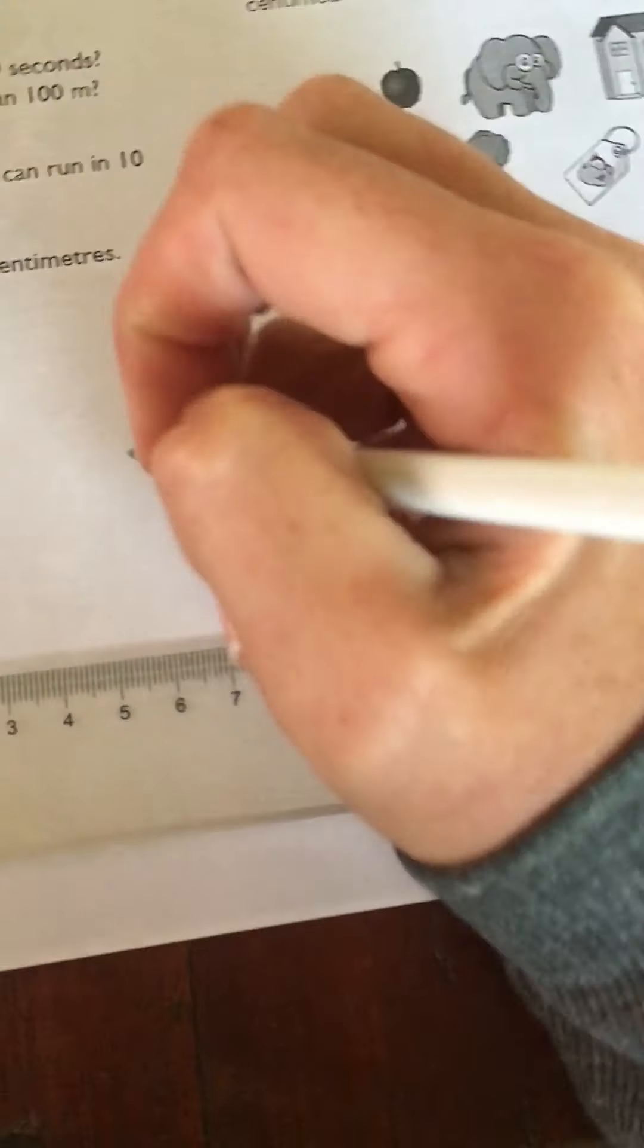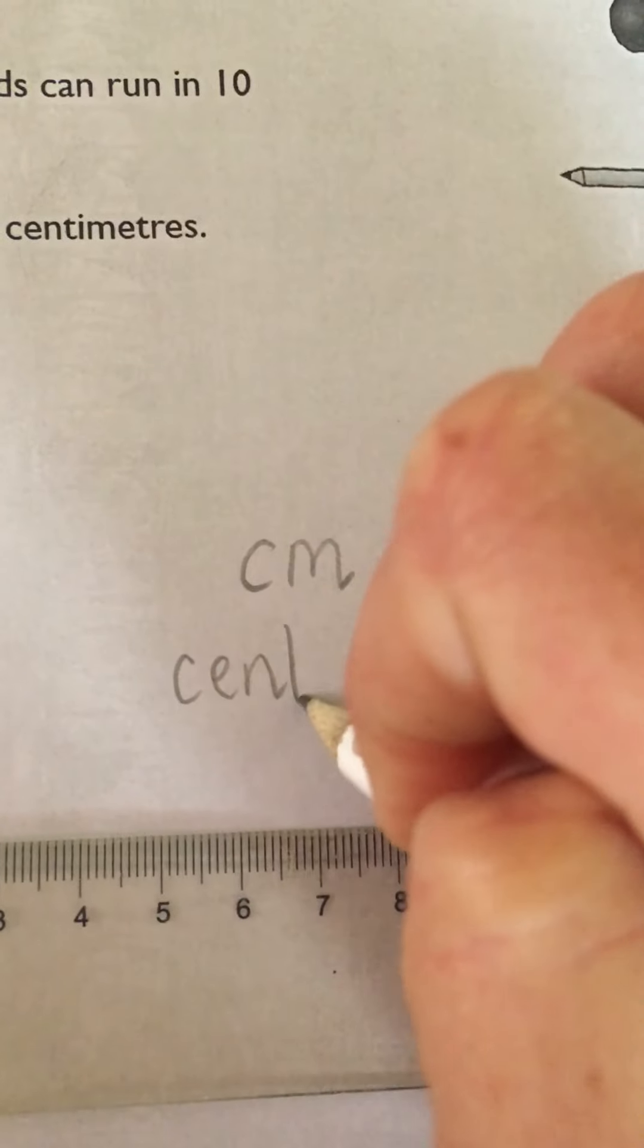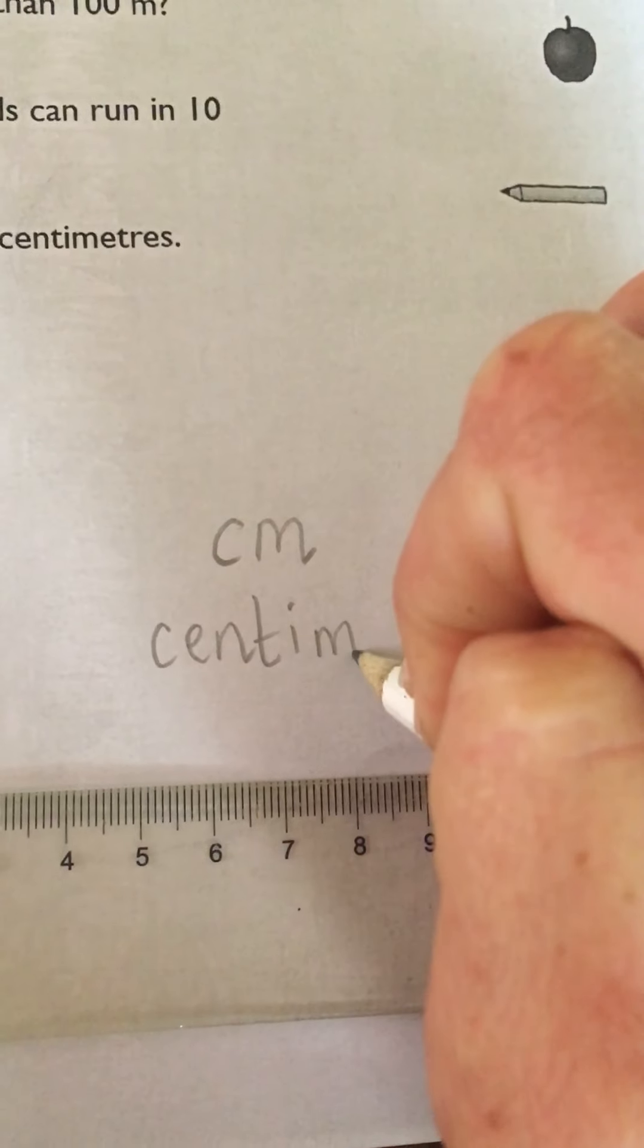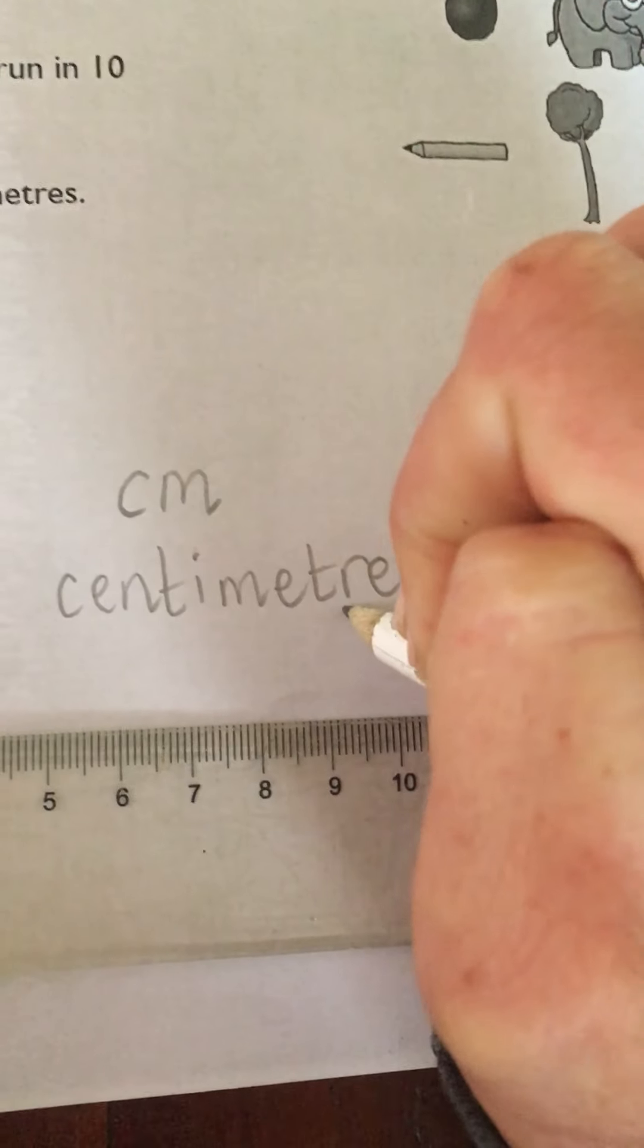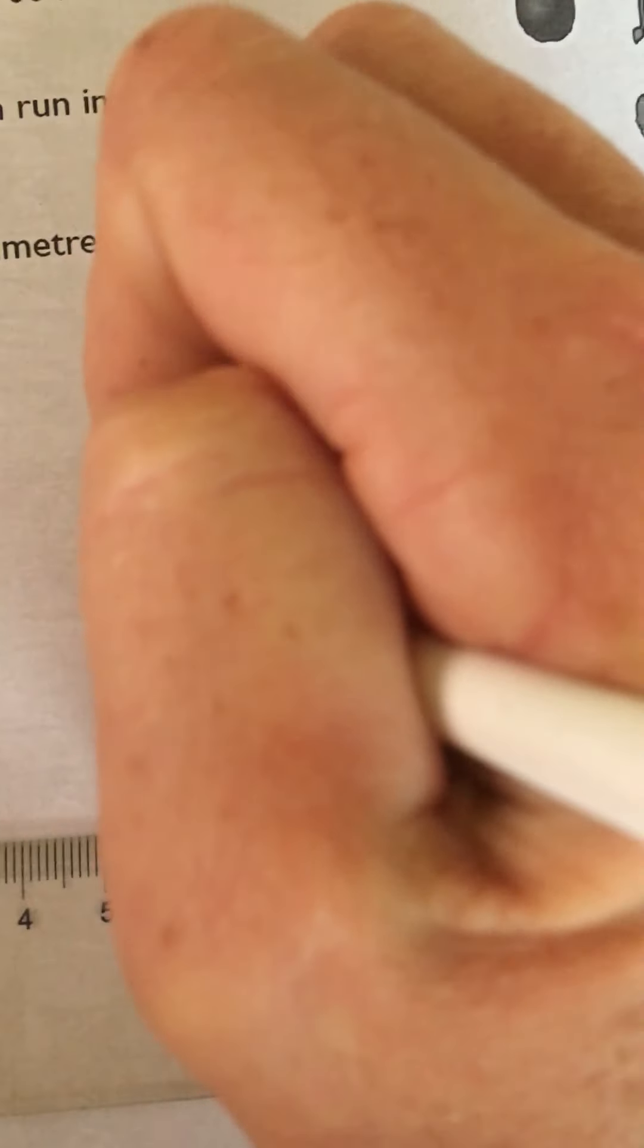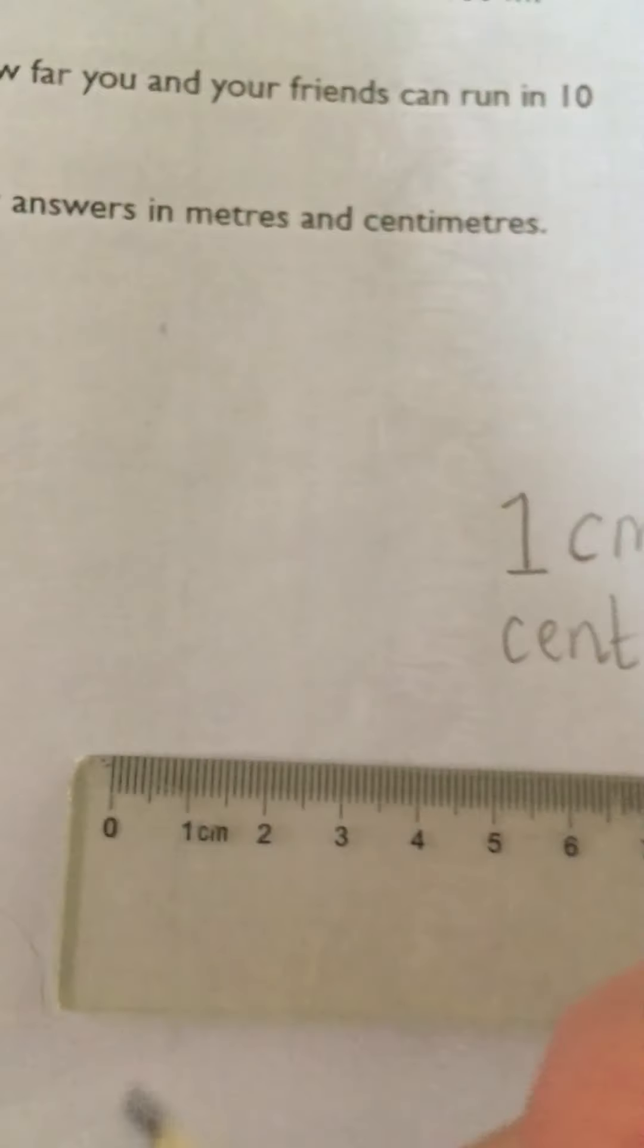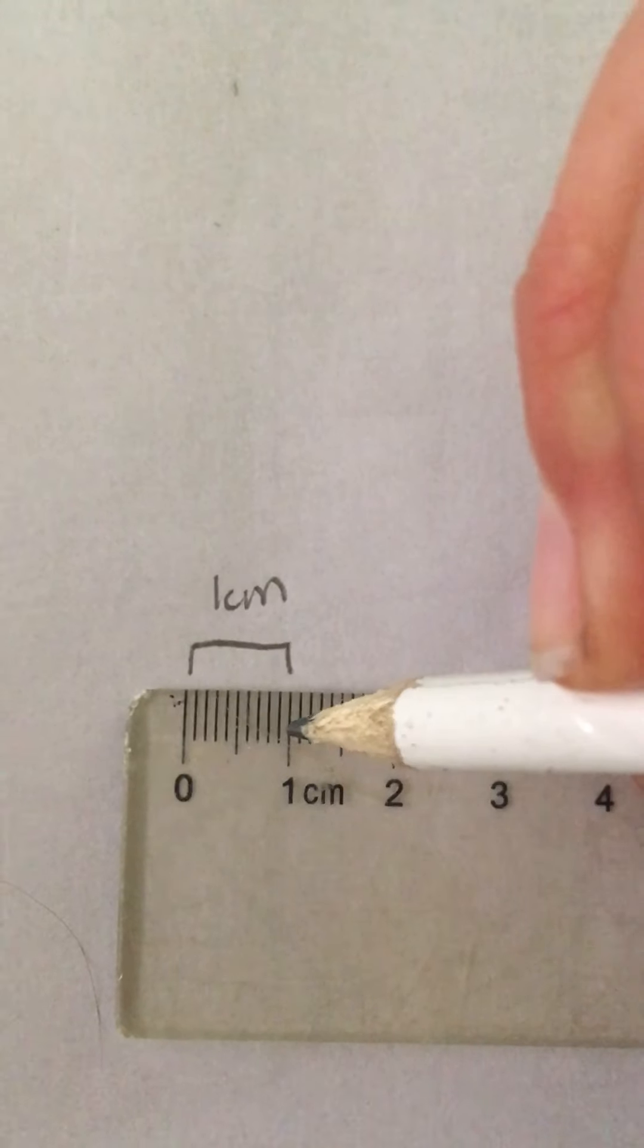So we have done centimeters so far. Centimeters are CM and we spell them centimeters. Meters is like metres - it's got the r first, that's the only tricky part. We're going to look at one centimeter. So one centimeter we can see on the ruler is just this one centimeter, and it's marked on the ruler.